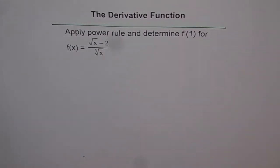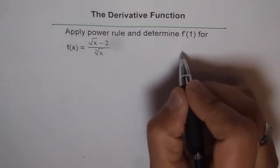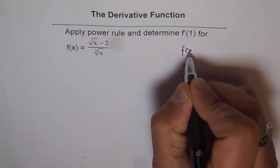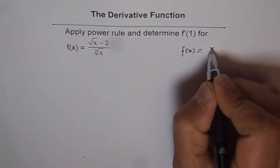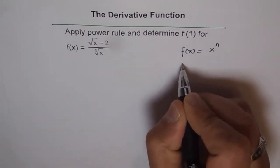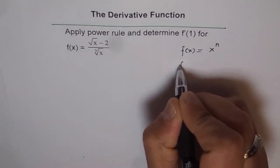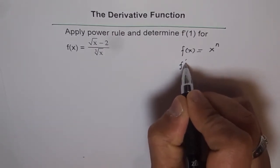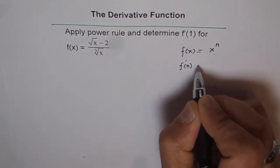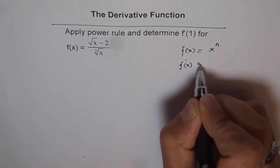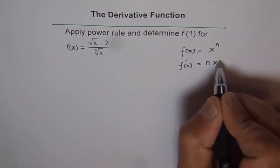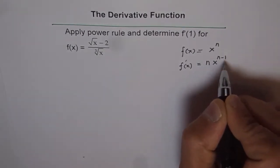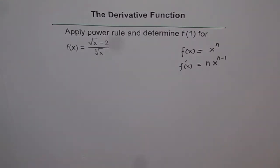Now, what is the power rule? The power rule states that if f(x) equals x to the power of n, then the derivative f'(x) equals n times x to the power of n minus 1. That is the power rule.